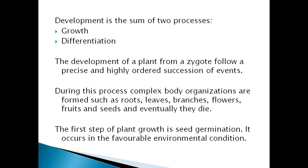Development is the sum of the two processes: growth and differentiation. The development of a plant starts from the zygote. The zygote is a fertilized egg — it is a single-cell structure. Every life starts from a single cell, that is the zygote, and it follows a precise and highly ordered succession of events so that growth can occur.